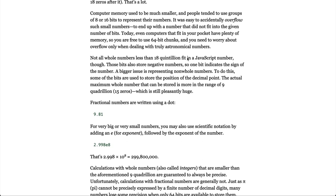Computer memory used to be much smaller and people tended to use groups of 8 or 16 bits to represent their numbers. It was easy to accidentally overflow with small numbers to end up with a number that did not fit in a given number of bits. Today, even computers that fit in your pocket have plenty of memory, so you're free to use 64-bit chunks and you need not worry about overflow only when dealing with truly astronomical numbers.